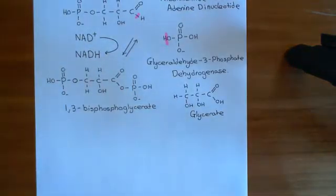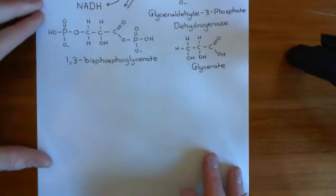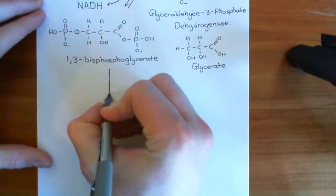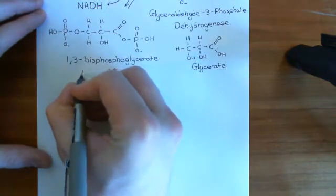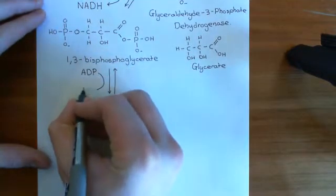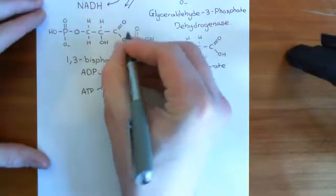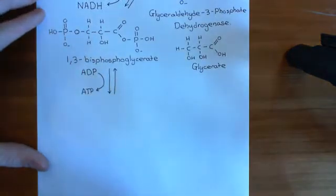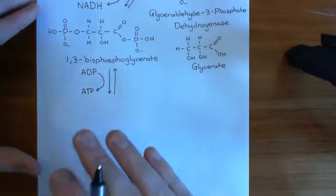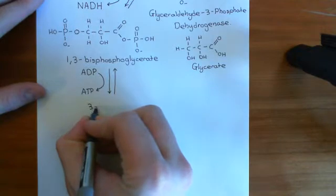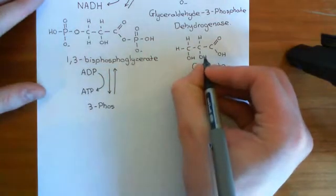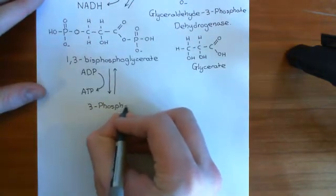So we've now produced 1,3-bisphosphoglycerate, and that was a reversible reaction. What we're now going to do is remove one of the phosphate groups from the 1,3-bisphosphoglycerate. This is when we're starting to get a payoff, because when we take the phosphate group off this time, it will generate a molecule of ATP from ADP. We're going to bring a molecule of ADP in, nick this first phosphate group off the 1,3-bisphosphoglycerate molecule, and attach it onto the ADP to create adenosine triphosphate.